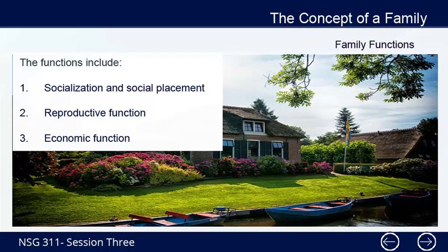2. Reproductive function — the continuity of both the family and the society is ensured through this function, though influenced by various modern changes discussed earlier. This function is being achieved through adoption, artificial means, or other technological means that may or may not include a second parent. 3. Economic function — achievement of economic survival is now done through many means. Children were expected to contribute towards this; fathers were expected to bring in money while the mother stays at home to take care of the children.